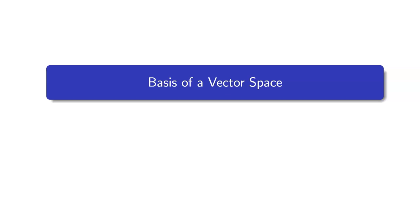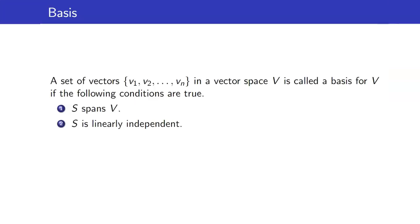In this lesson, I am going to talk about the basis of a vector space. When is a set of vectors a basis for a vector space? It must satisfy these two conditions. First, S must span V, and second, S must be linearly independent.